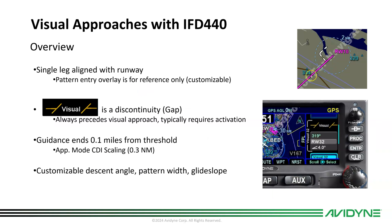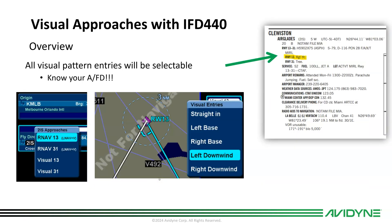There's a single leg — basically an extended centerline off the runway — but you also have the ability to show base and downwind legs that you can manually fly. There's no guidance on the downwind and base legs, but it gives you a visual reference. You'll see a discontinuity — a gap that precedes a visual approach — which means it requires activation. Guidance for a visual approach ends one tenth of a mile from the threshold using approach mode scaling, which is three tenths of a nautical mile. You can customize the descent angle, pattern width, and glide slope.